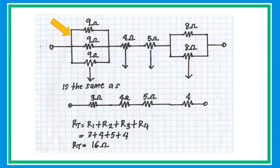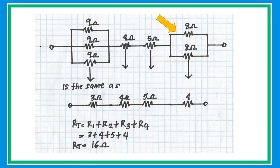The next example looks hard but is actually simple with a few tricks. Three 9-ohm resistors in parallel: divide 9 by 3 to get 3 ohms. Two 8-ohm resistors in parallel: half of 8 gives 4 ohms. The circuit is now simplified to a series circuit. Using RT equals R1 plus R2 plus R3 plus R4, substitute and add all individual resistors to get an equivalent resistance of 16 ohms.